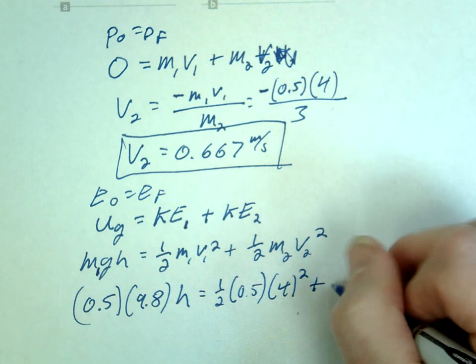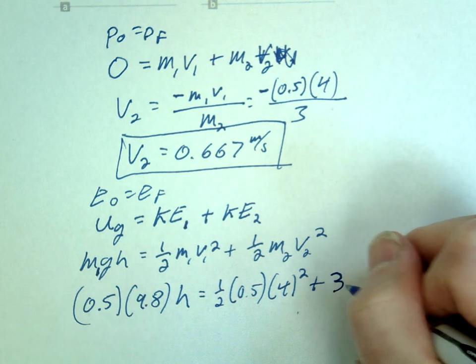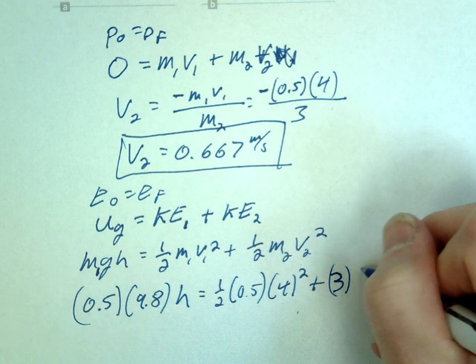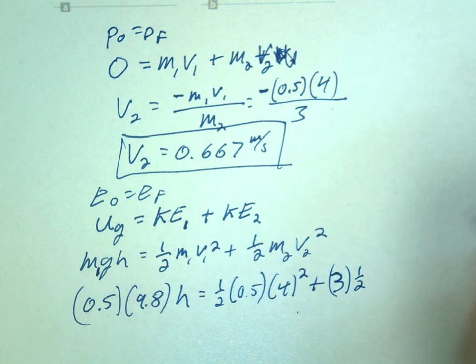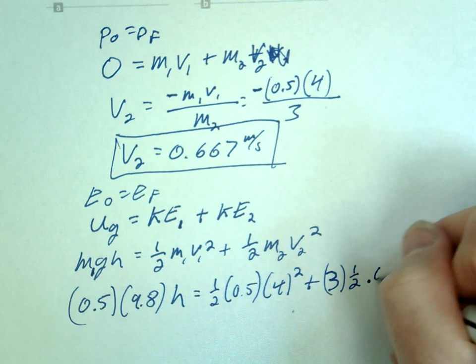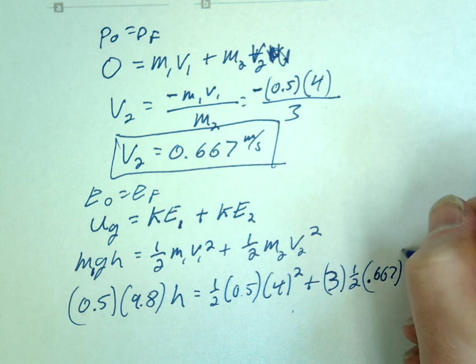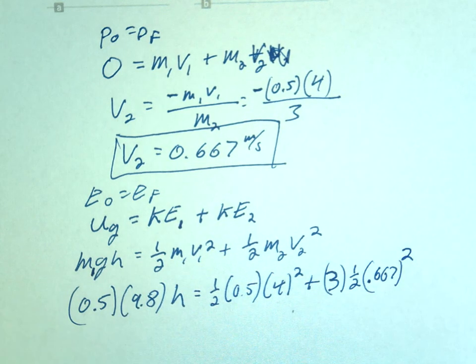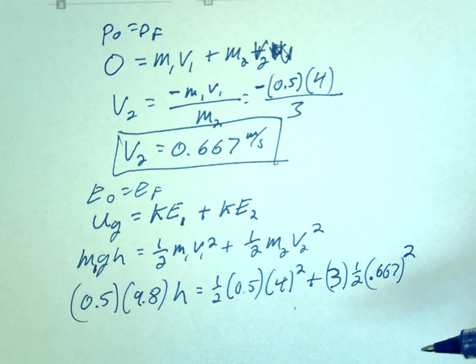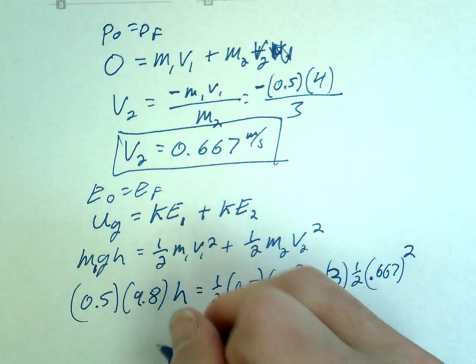The big one, right? 3. I forgot my 1 half, don't forget your 1 half, and 0.667 squared. Don't forget to square. There you go. You guys can do the math here. Plug it in. And what's the height?